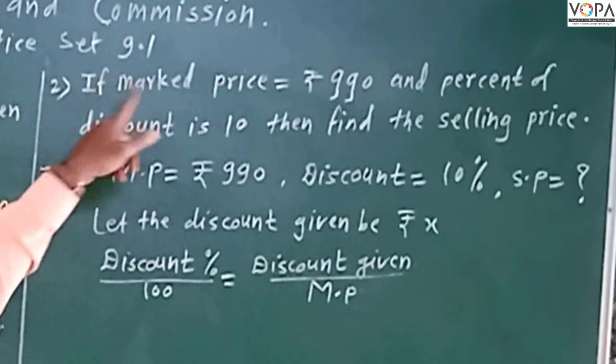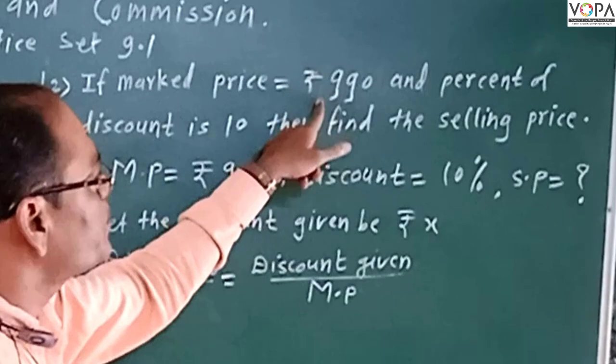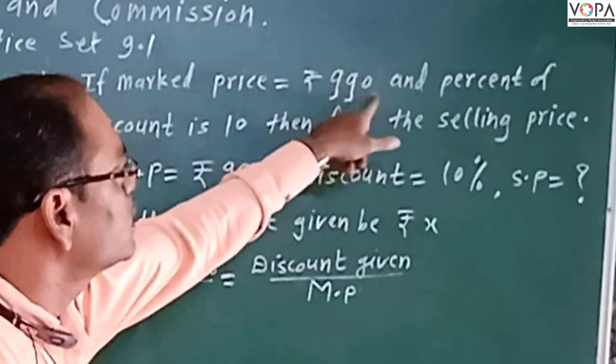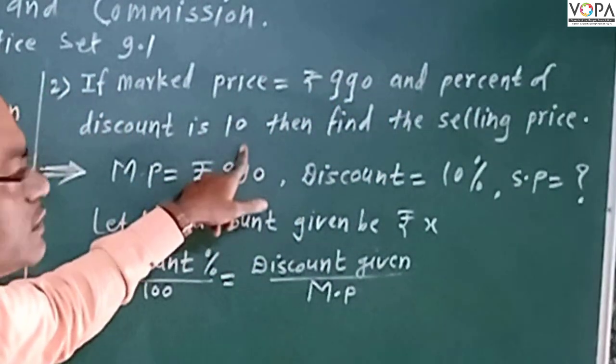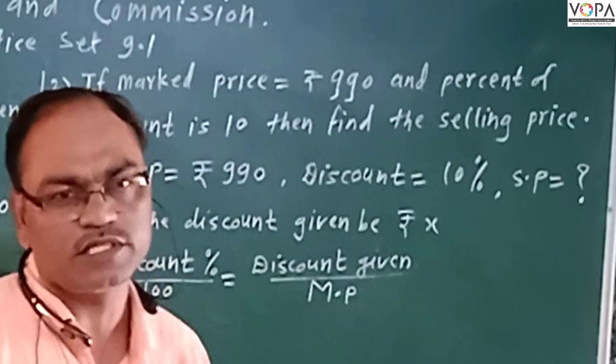If marked price equals to ₹990 and percent of discount is 10, then find the selling price.